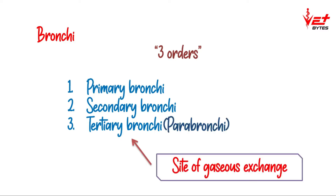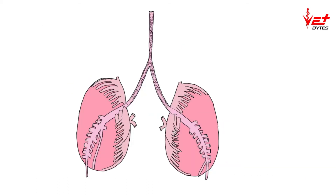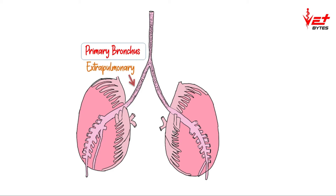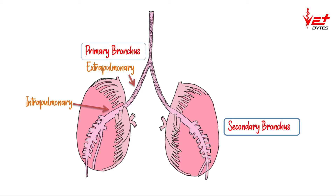The trachea bifurcates into two primary bronchi — left and right. The primary bronchus present outside the lung is called the extrapulmonary primary bronchus. The primary bronchi further divide to form secondary bronchi. The secondary bronchi are classified into four groups based on their locations.